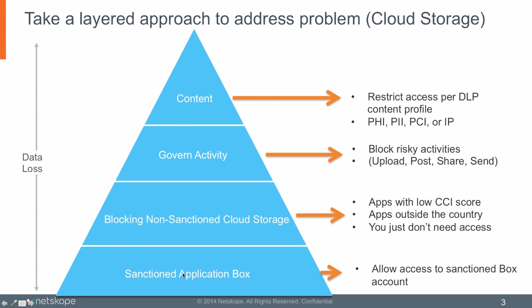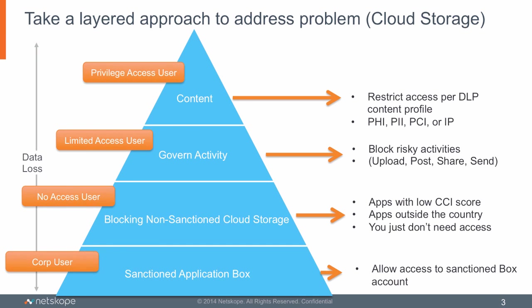Starting from the bottom and working up: we have our sanctioned application at the bottom, and the top three levels apply to non-sanctioned cloud storage applications. There are a couple of different policy levels. The starting point is the sanctioned application — the majority of users should have access to it. We can do that because we can see the sanctioned application's instance ID and explicitly allow it for most users.